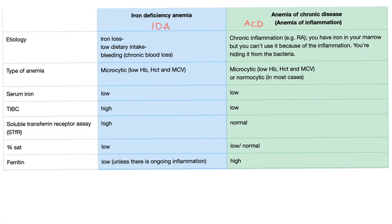What type of anemia is it? Iron deficiency anemia is a microcytic anemia — it can start as normocytic and then become microcytic. Anemia of chronic disease is microcytic too, but most of the time it's normocytic.